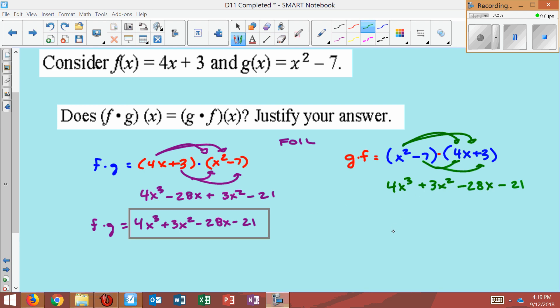these two match each other perfectly, so this is commutative. And I would say yes, commutative, since f times g equals g times f.